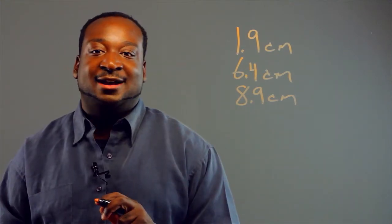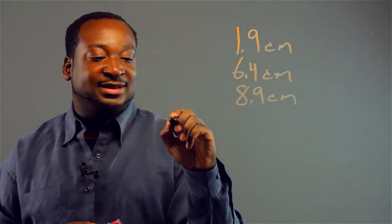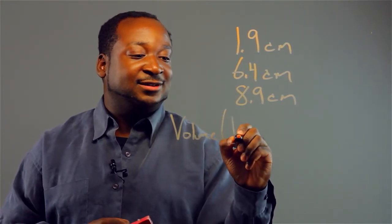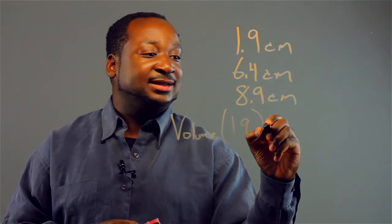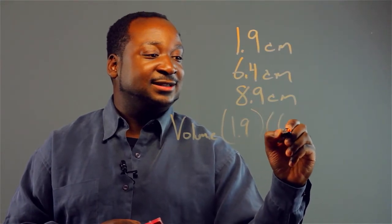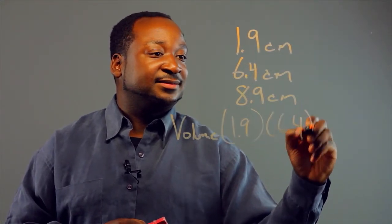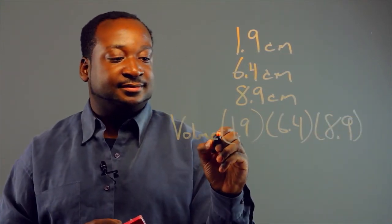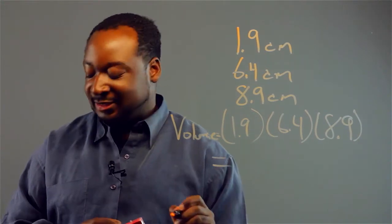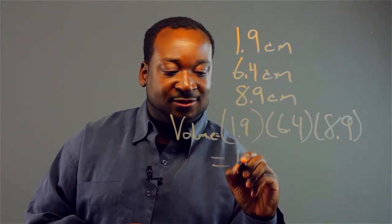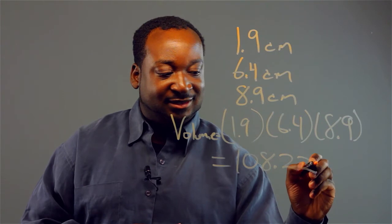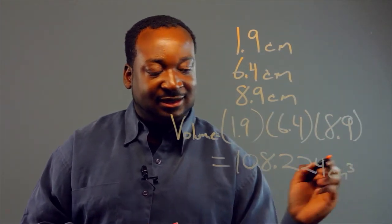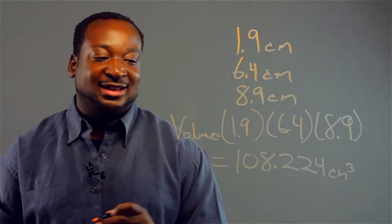And now to find the volume, you just multiply 1.9 times 6.4 times 8.9. So the volume is 108.224 cm cubed. And that's the volume.